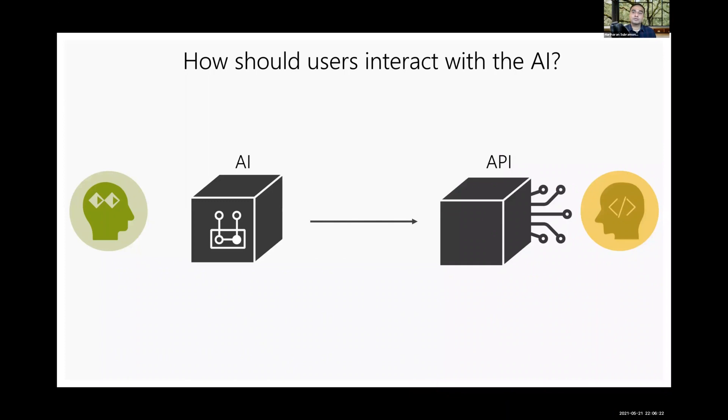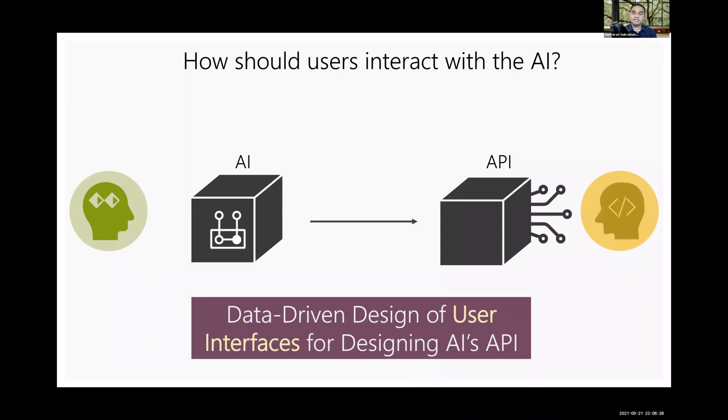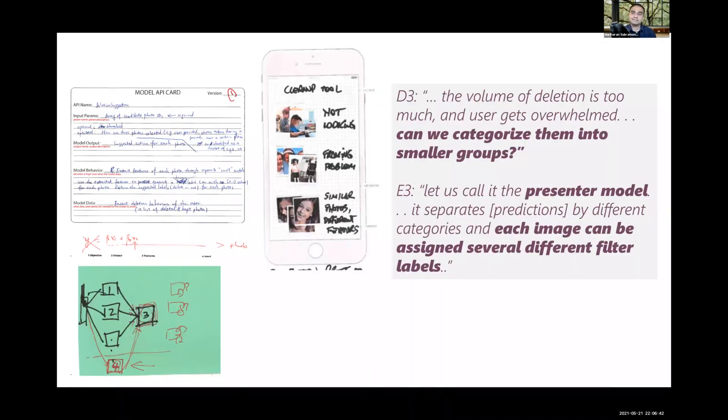Next, teams proceeded to prototype the user interface and APIs between the model and end-users. Based on their model's implementation specifications, the designers and engineers negotiated what inputs they should expect end-users to provide and how to format and present the model's outputs back to end-users. In one of the sessions, the designer anticipated a large number of photos recommended for deletion, and they questioned if the model can intelligently organize the photos into smaller groups based on reason. The engineer responded that images could have multiple reasons for deletion, and then the team proceeded to discuss how they might assign different weights to the factors and surface the primary reason for deletion.